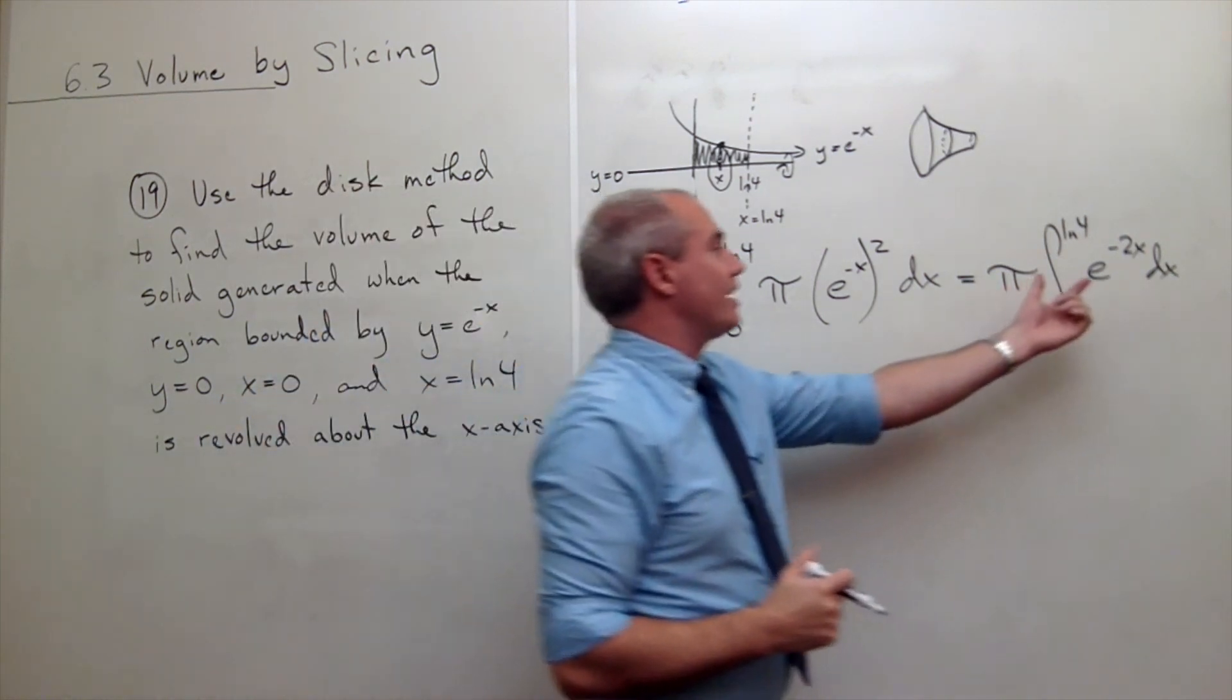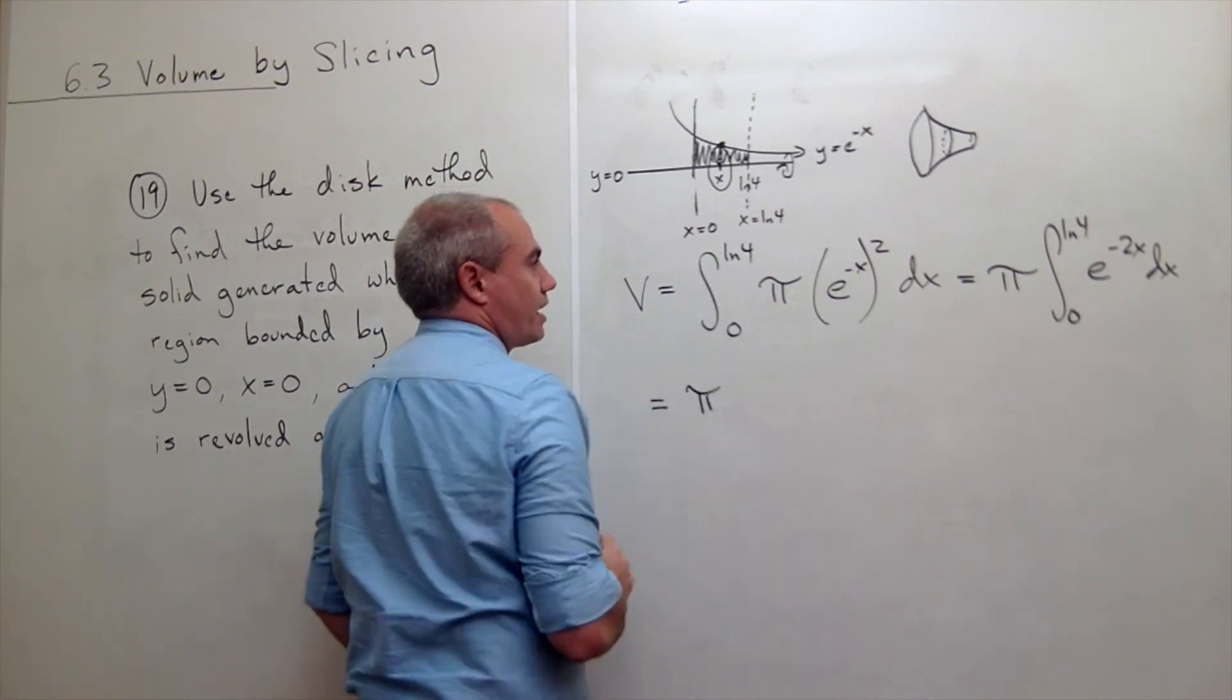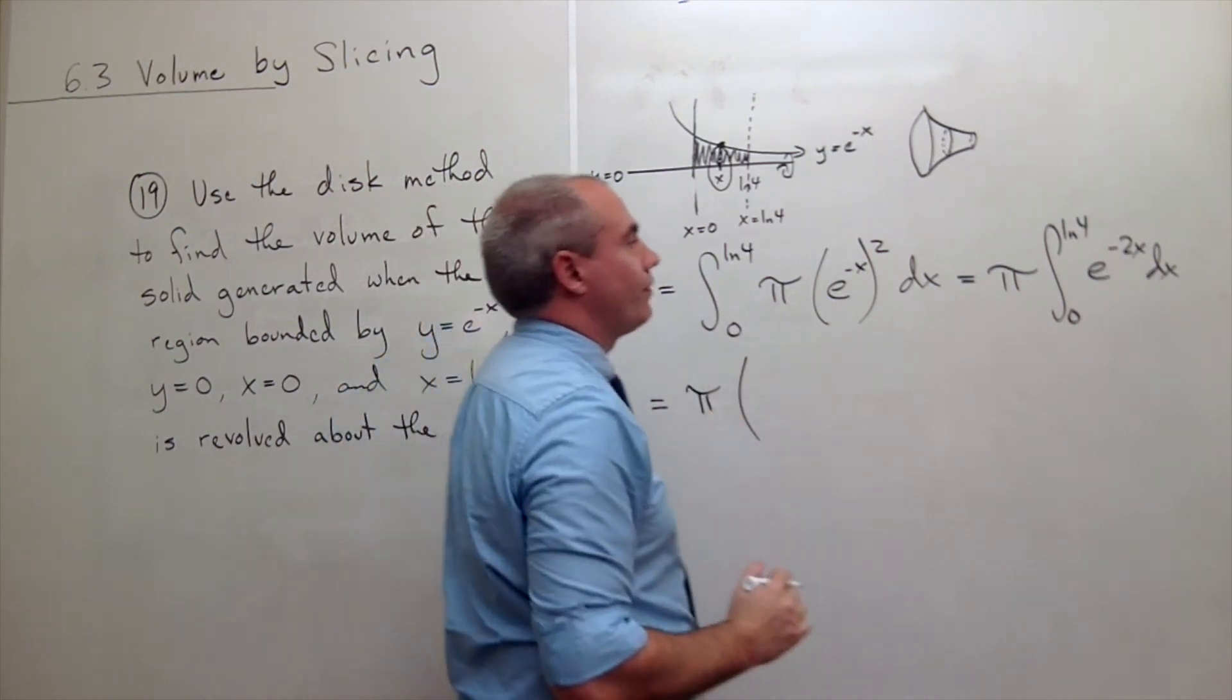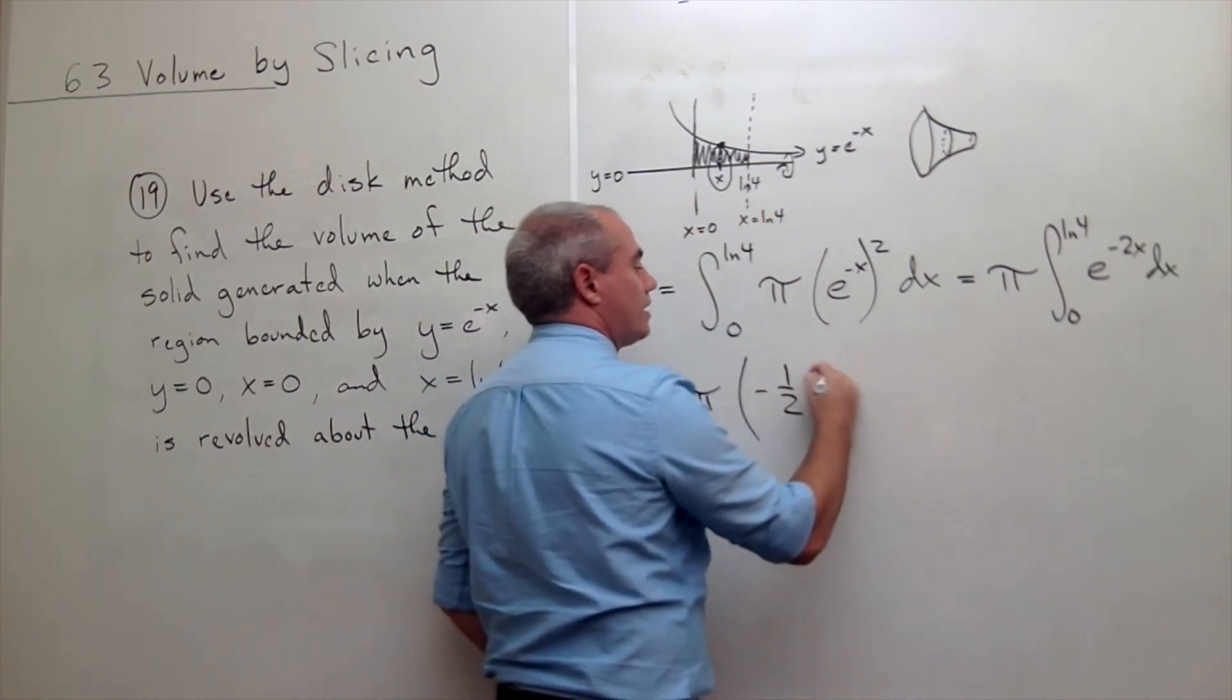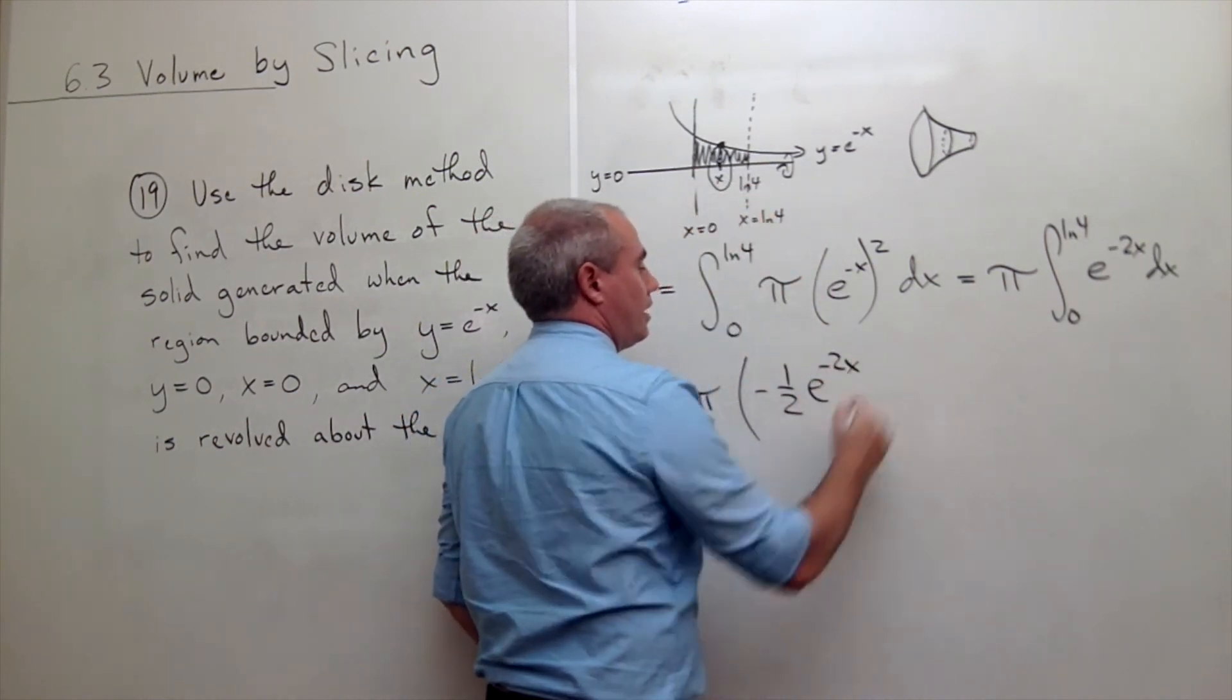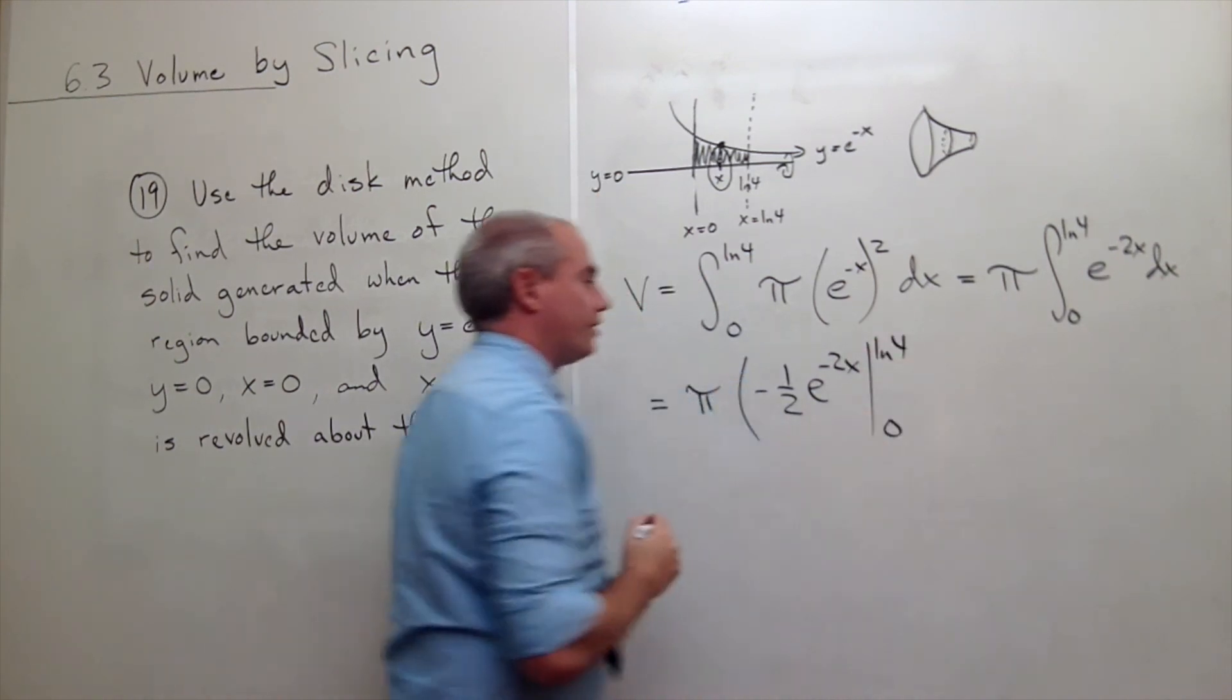So now I can take an antiderivative here. I still have pi on the outside. And the antiderivative of e to the negative 2x would be minus 1 half e to the negative 2x. And that's going to be evaluated from 0 to ln of 4.